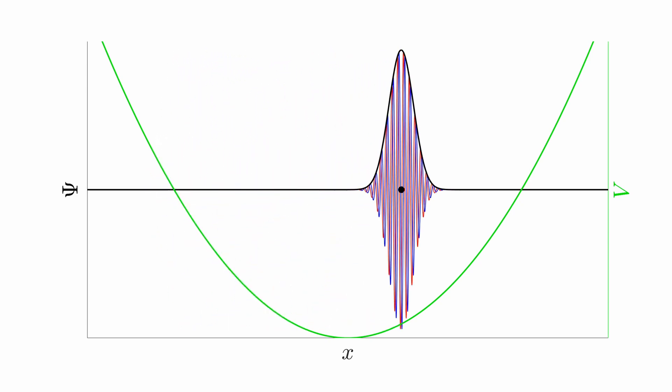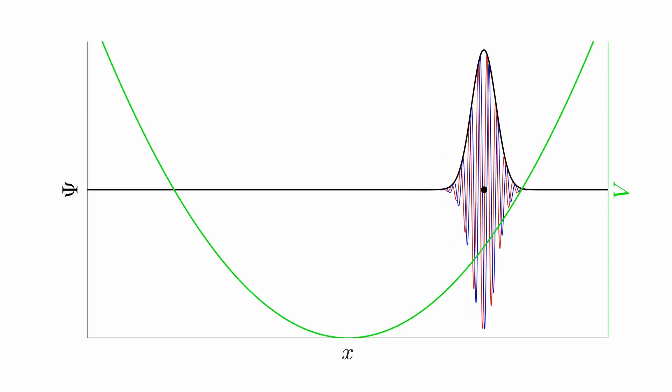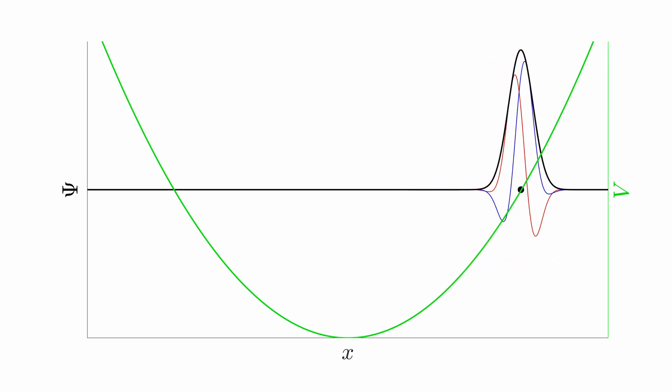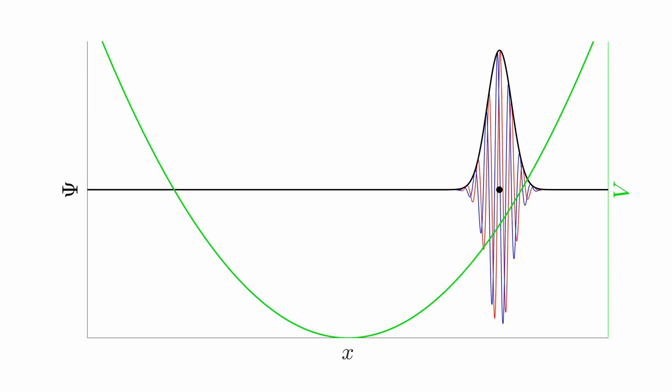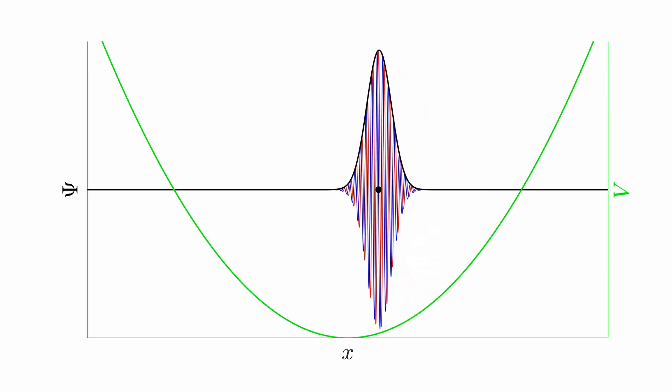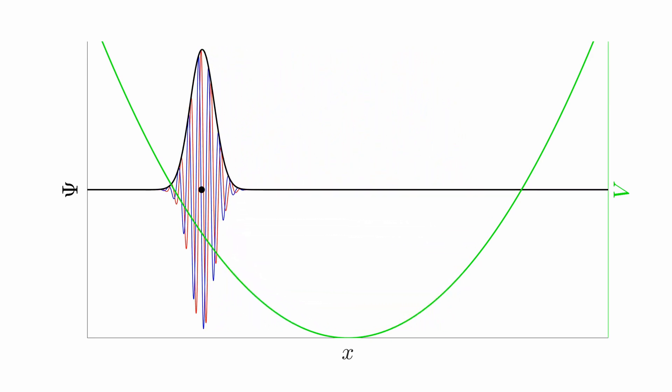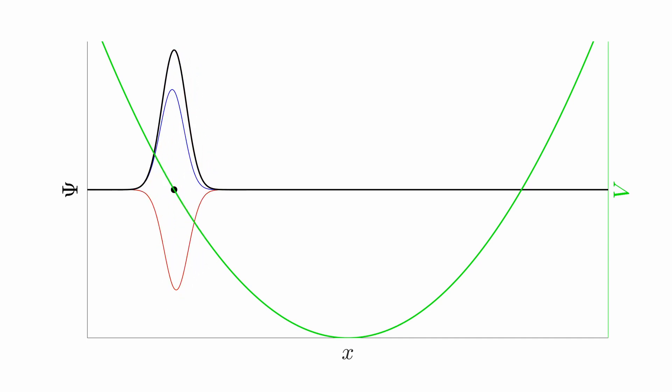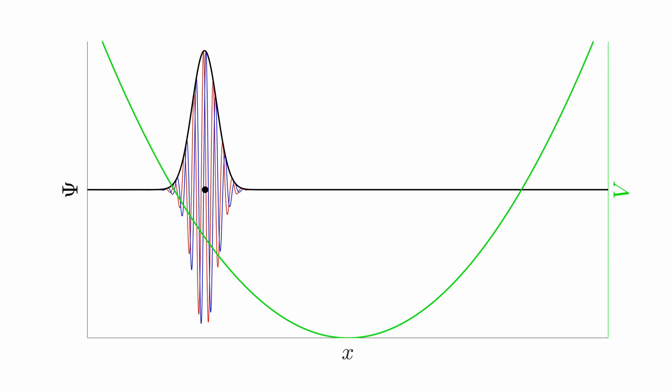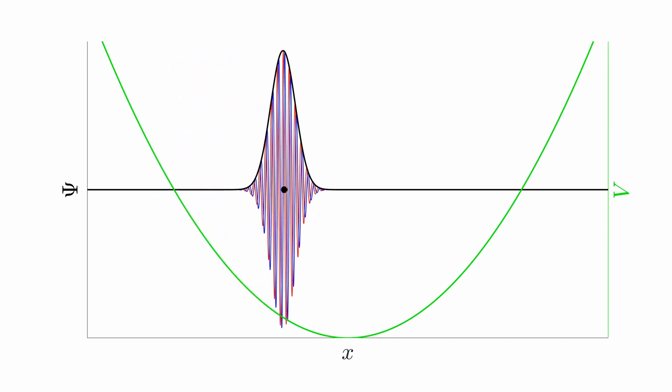By tracking the motion of a classical particle, we can see that the wave packet closely mirrors its motion. There is some penetration of the wave packet into the classically forbidden region, but only slight. The overall behavior of the wave packet is very particle-like.